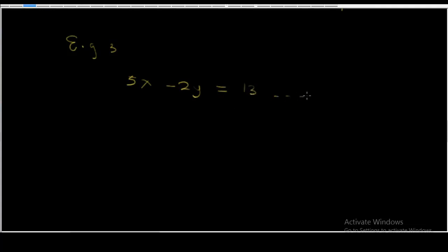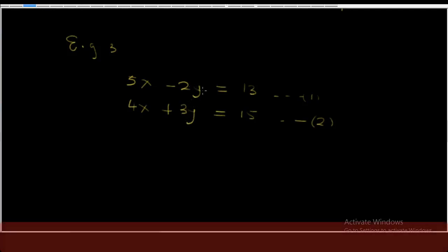Let's go to example 3. We have 5x minus 2y equals 13 — this is equation 1 — and 4x plus 3y equals 15 — this is equation 2. Here the coefficients of x in both equations are different, and likewise the coefficients of y are also different. So what we're going to do is make the coefficients of y the same by multiplying.